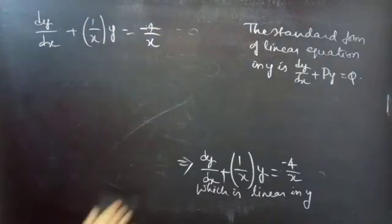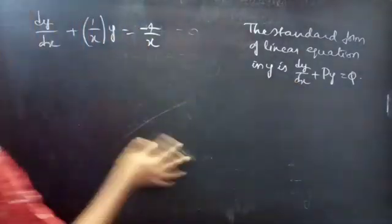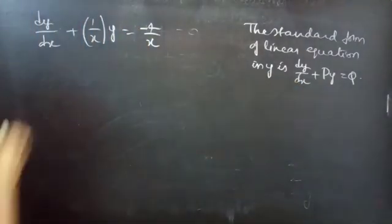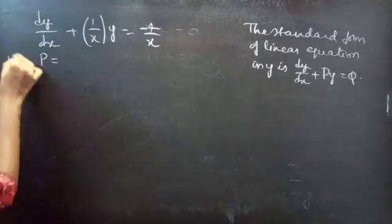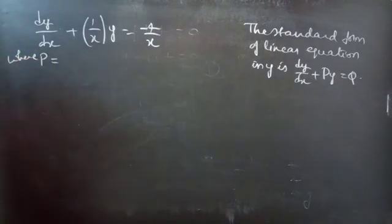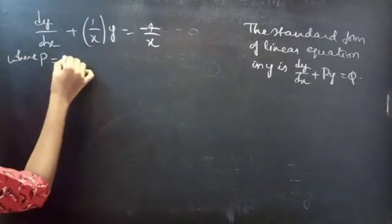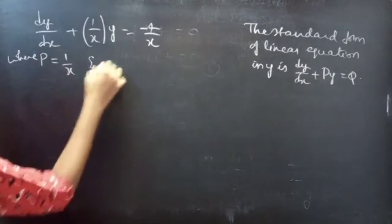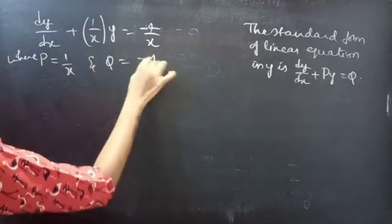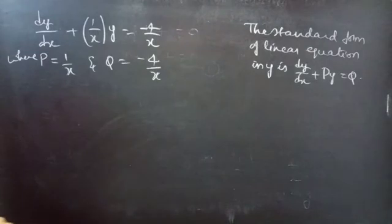Now we have dy/dx + (1/x)·y = -4/x. By comparing with the standard form dy/dx + P·y = Q, we get P = 1/x and Q = -4/x. Here, P and Q are functions of x.